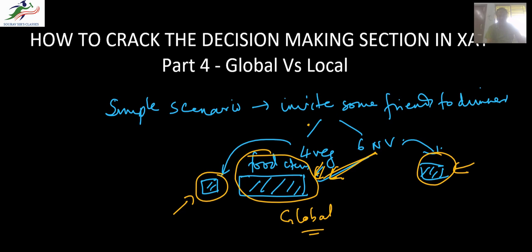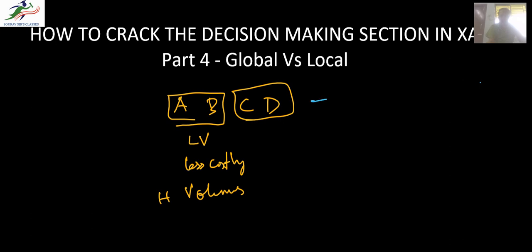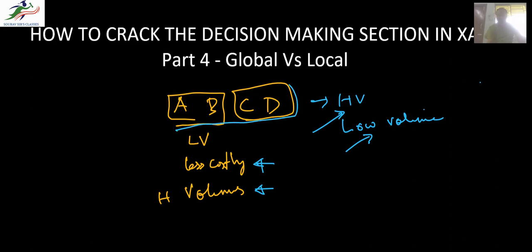This is exactly what the principle of global versus local approach does for any kind of decision-making situation. Suppose you are a company that sells four products A, B, C, and D. A and B are low-value products — they are less costly and sell in large volumes. C and D are products which are high value but low volume, like jewellery items, whereas cosmetics, for example, are less costly but sell in large volumes.